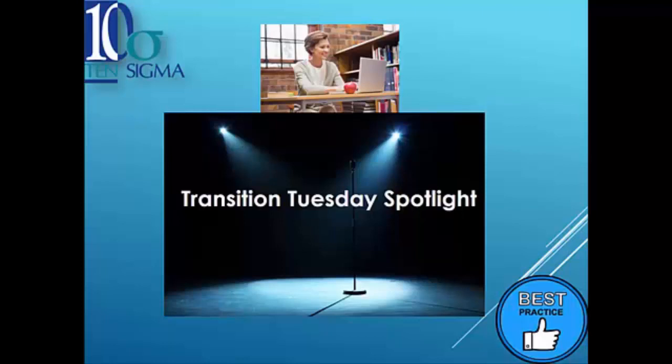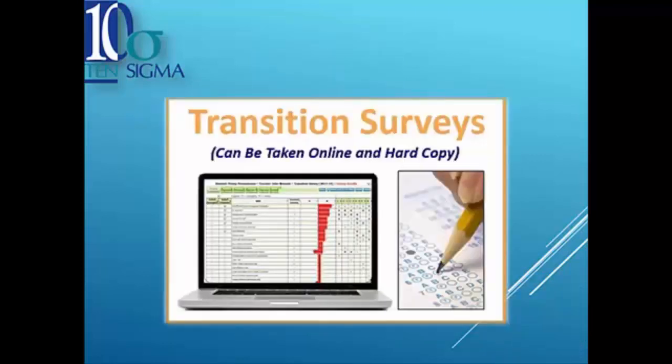What 10 Sigma product and materials are you using? Right now we are currently using the TRACS transition surveys online, and we started using that in the 2017-18 school year. Prior to that we had used the paper surveys, but I like the online version much better.